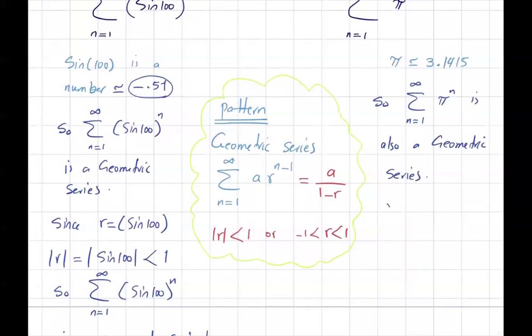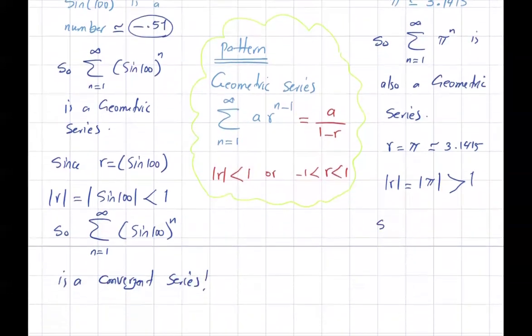What is r in this case? The ratio in this case is π, which is about 3.1415 and so on. So the absolute value of r, which is the absolute value of π, is more than 1. Since it's more than 1, the series of π to power n, n starts from 1 goes to infinity, is a divergent series.